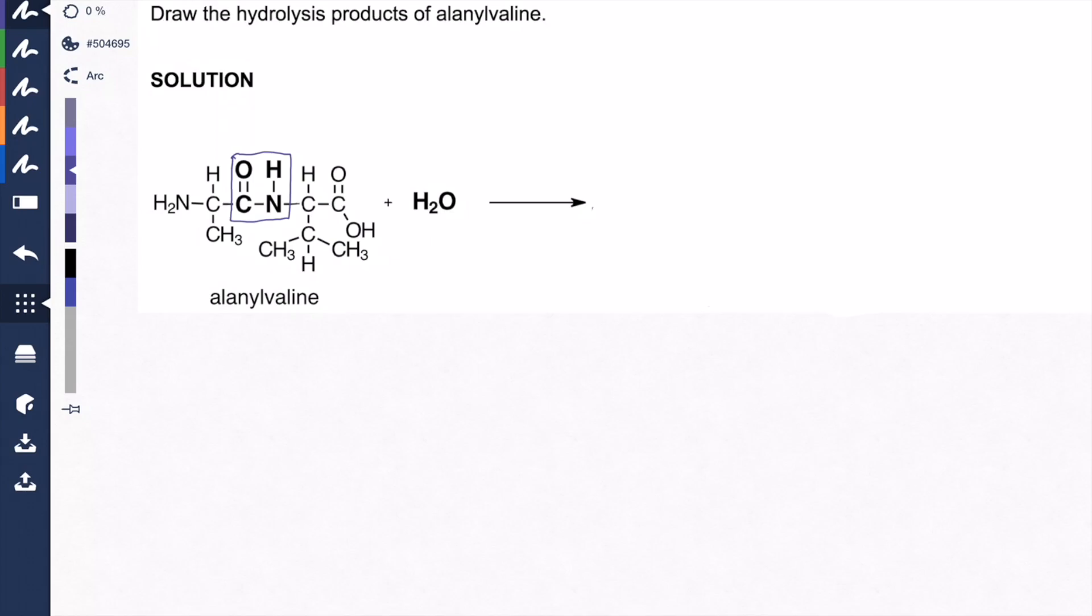Now remember on an exam, those won't be bolded. They'll just be written. So you'll have to know what to look for. Look for the amide bond, the carbonyl bonded to an oxygen, amide bond. This is more specifically a peptide bond because it's an amide that's connecting amino acids.